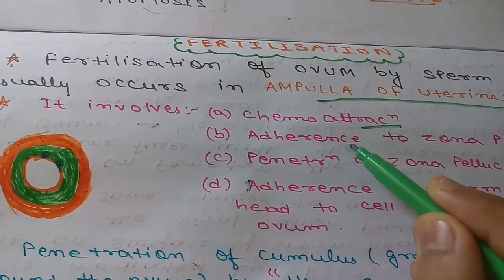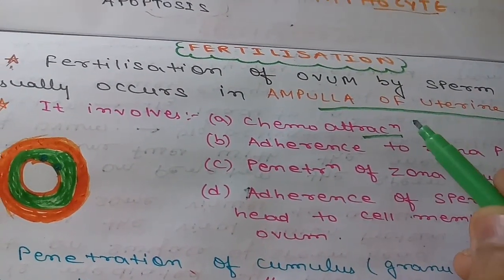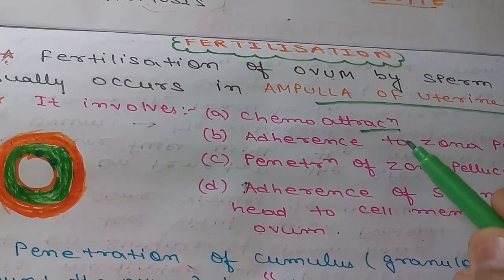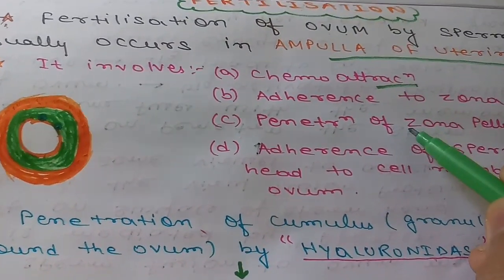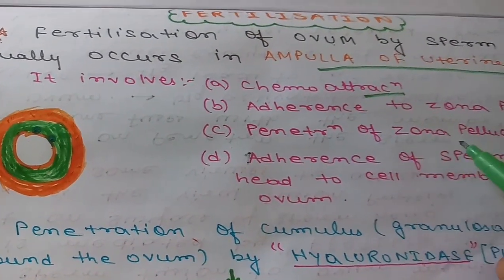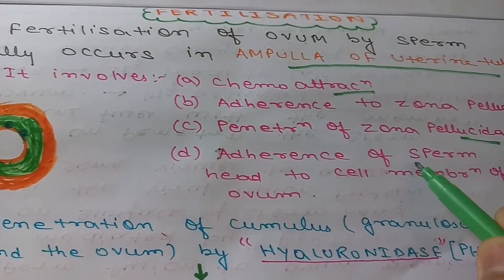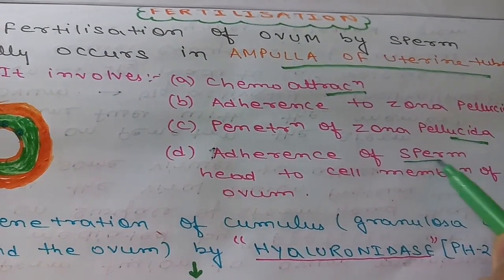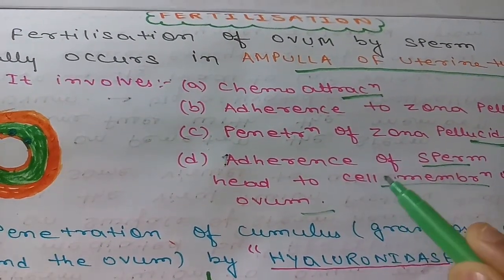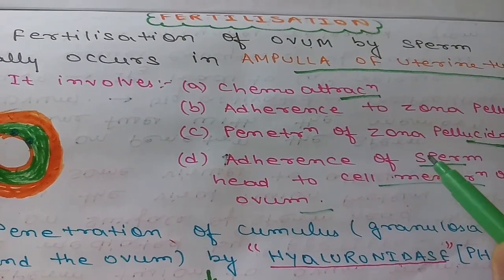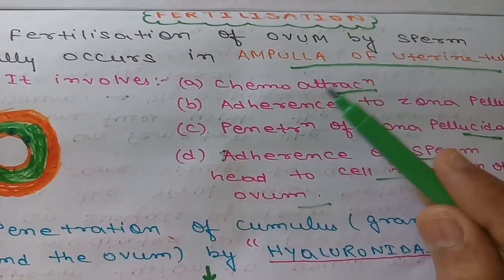The first step is chemo attraction of the sperm by the substances released from the ovum. The second one is adherence to zona pellucida — the sperm will go and adhere to zona pellucida. The next step is penetration of zona pellucida by sperm, and the final step is the adherence of sperm to the cell membrane of ovum, that is the fusion of the cell membrane of sperm and the cell membrane of ovum.